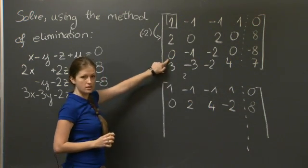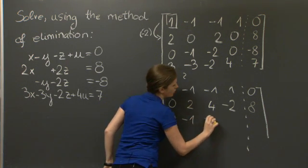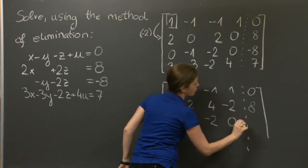The third row already has a 0 here, so I can just copy it over. Here: 0, -1, -2, 0, -8.